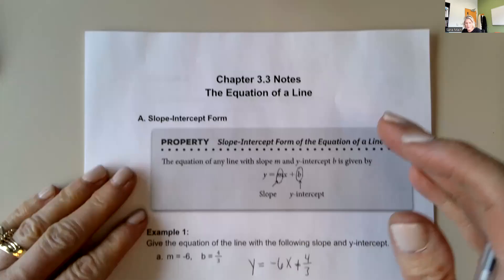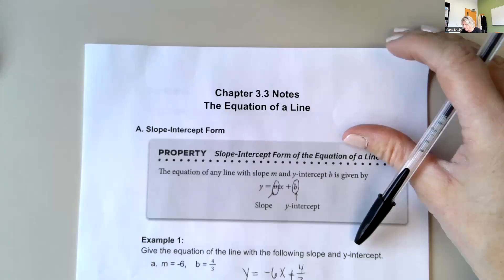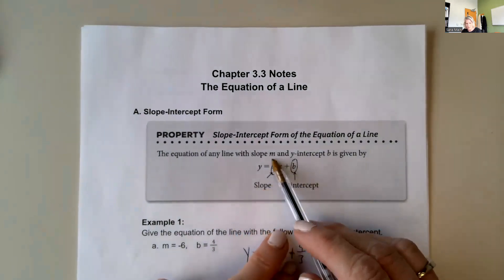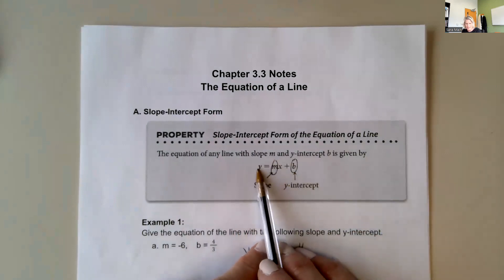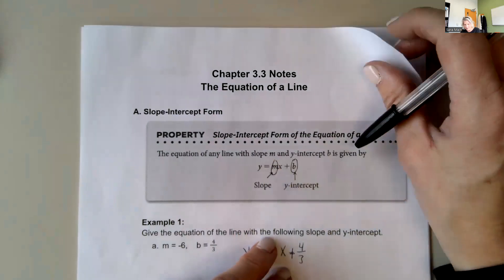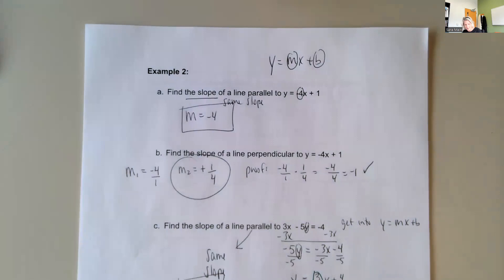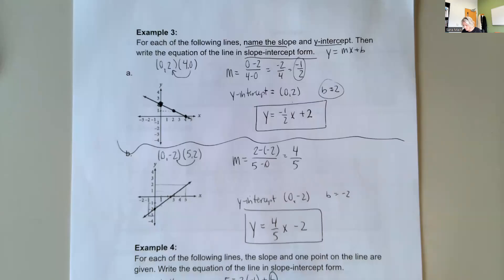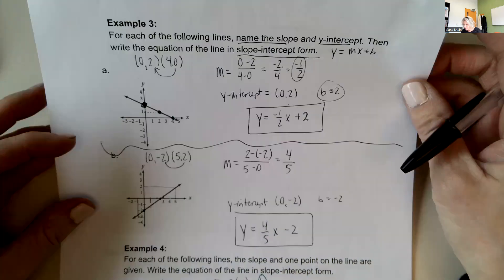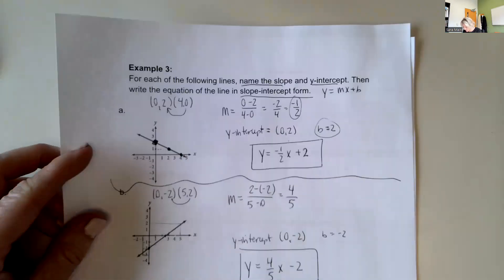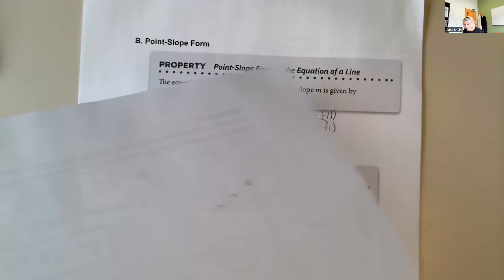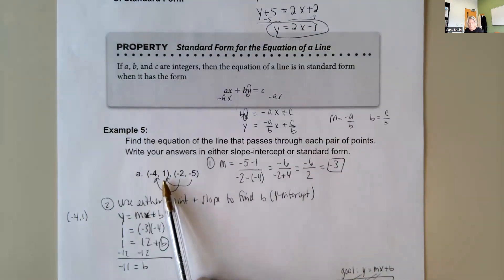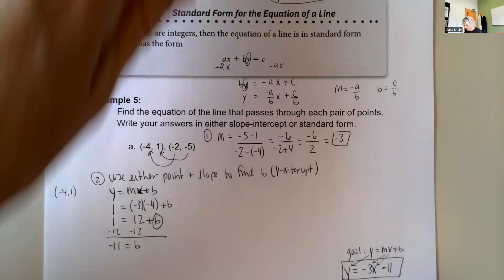Welcome back to the second part of Lesson 3.3, The Equation of a Line. So far, we have learned how to recognize the slope and the y-intercept when our equation is in slope-intercept format, how to find an equation using slopes of parallel and perpendicular lines, how to find an equation given the slope and y-intercept, and how to find an equation given two points — you find the slope, then solve for the y-intercept.